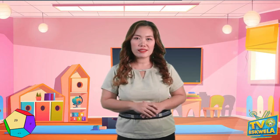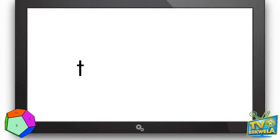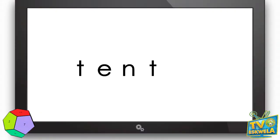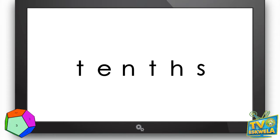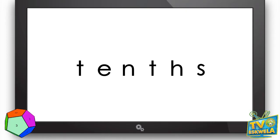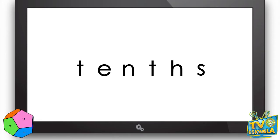Let us start our session by having a quick spelling and pronunciation drill. Let us spell the word 'tenths.' T-E-N-T-H-S. Tenths. Can you say it again? T-E-N-T-H-S. Tenths. Good job! Tenths.